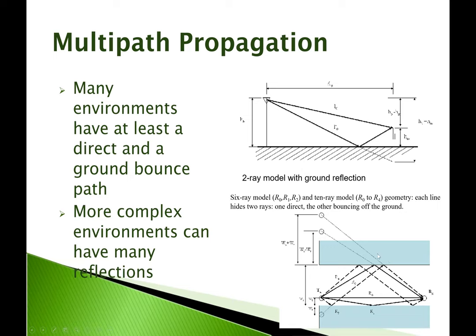More complex environments can have many reflections. This next diagram is a plan view — we're looking top-down — and there's a wall here and a wall there, so it looks like a corridor. We might have a direct path from transmitter to receiver, but we also might be bouncing off these walls — in fact we could bounce a couple of times off the walls, as these dashed lines indicate. In all of these cases we also have this ground bounce. This is a top-down view, so you might have the direct path and the ground bounce, and if this is in a building you might also have a bounce off the ceiling. So you can see that these complex environments can have many, many reflections.